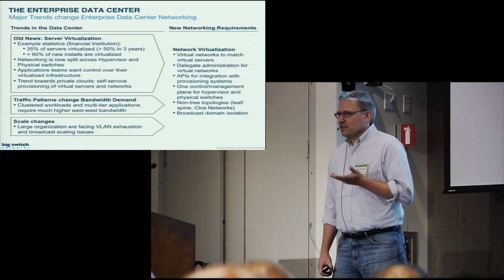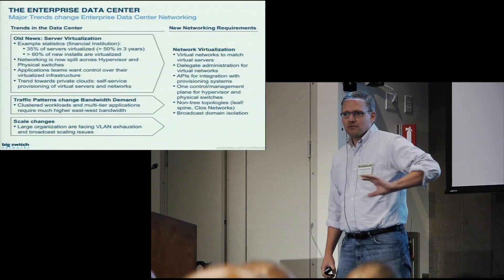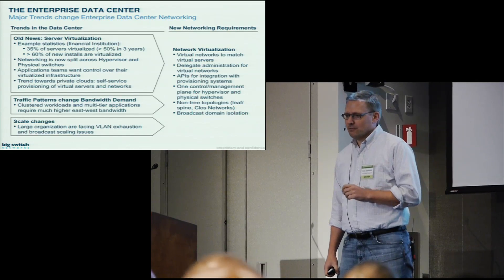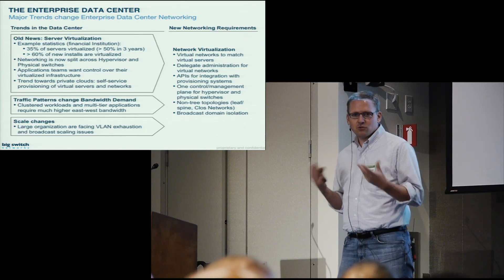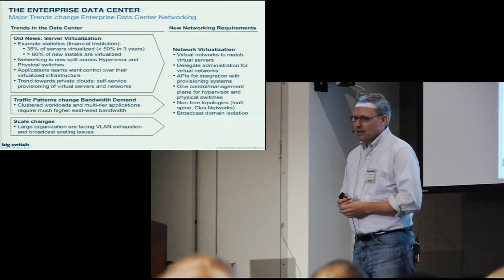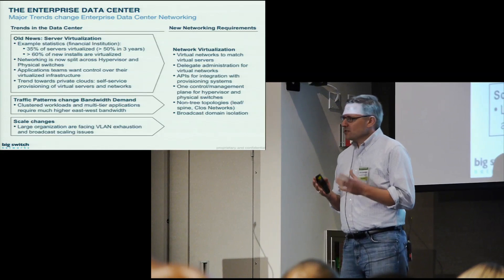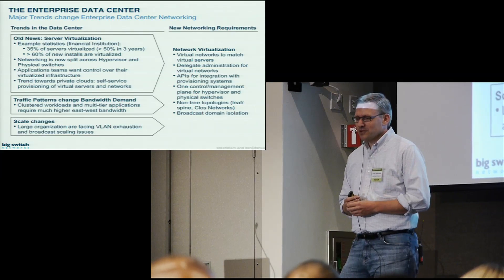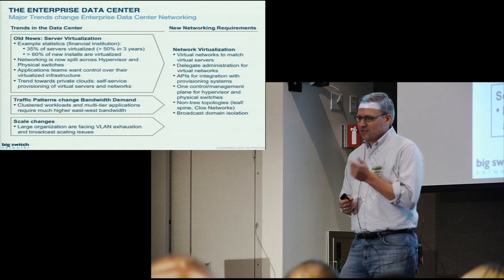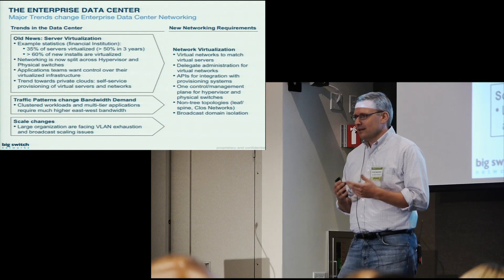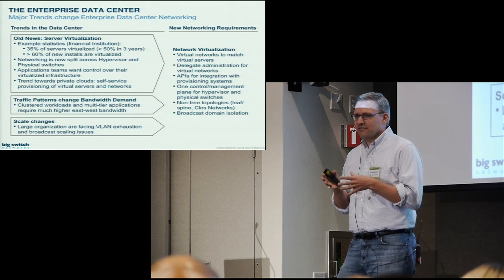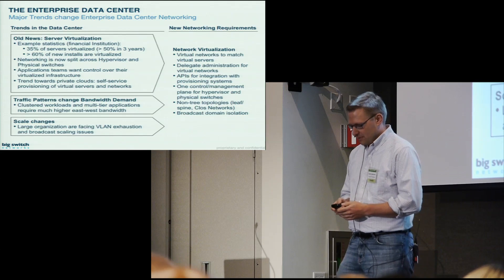Some other trends: the traffic patterns have changed. It used to be all north-south, meaning from the servers to the gateway. It's more and more east-west, meaning between servers, because of multi-tier applications, Hadoop clusters, and these kind of things. We're also seeing scale changes, not so much scale in terms of bandwidth - bandwidth is going up, no question - but it's scale in terms of, as Ken pointed out earlier, suddenly I have a very large number of MAC addresses, or I have more tenants than I have VLANs, so we're seeing exhaustion issues in those areas.